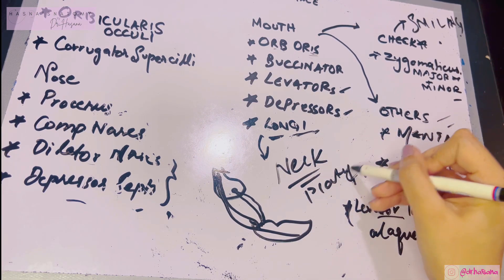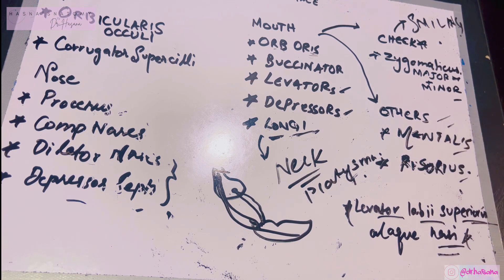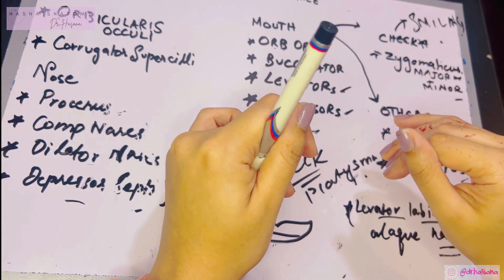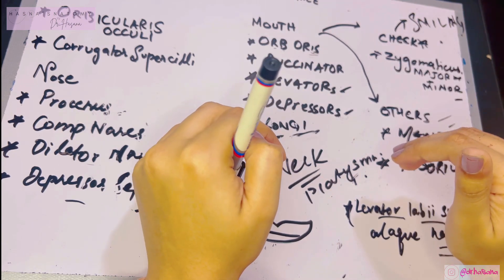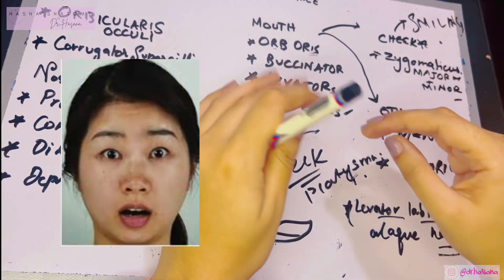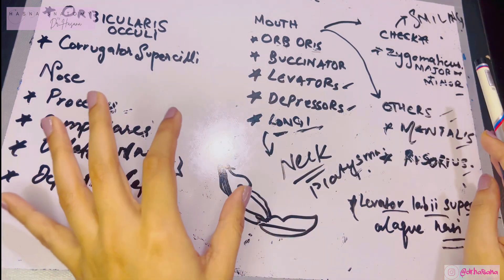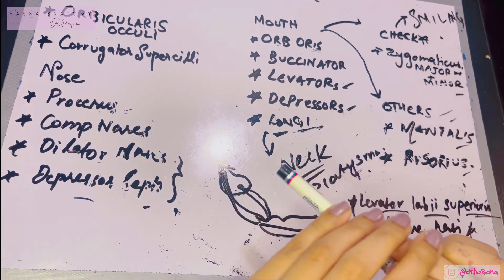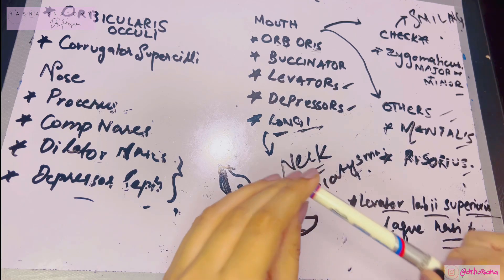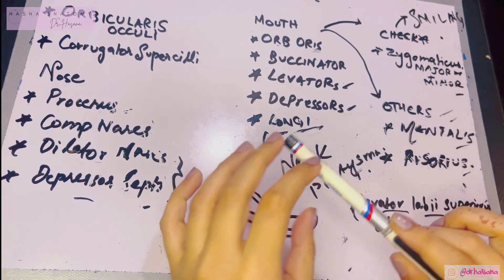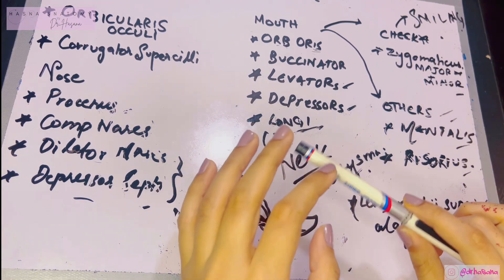The final muscle is the platysma, a muscle of the neck. It begins from the pectoral fascia and deltoid fascia, runs upward, and inserts into the base of the mandible. It causes wrinkling of the skin and pulls the angle of the mouth downward — the expression of surprise, horror, or fright. I hope this has covered most of your facial muscles today. For more conceptual and anatomical videos, don't forget to subscribe to my channel — thank you so much for watching.